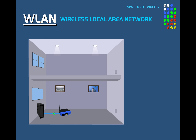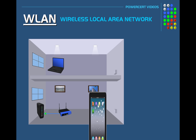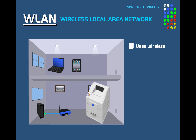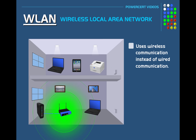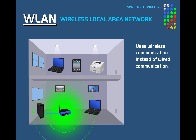A WLAN, or Wireless Local Area Network, is a local area network that uses wireless communication instead of wired communication. A wireless LAN is defined as having at least two devices that use wireless communication to form a local area network. A wireless LAN will typically have a Wi-Fi router or a wireless access point for wireless devices such as laptops, tablets, wireless desktops, and smartphones to communicate. So in simple terms, a wireless LAN is a LAN but without using cables.